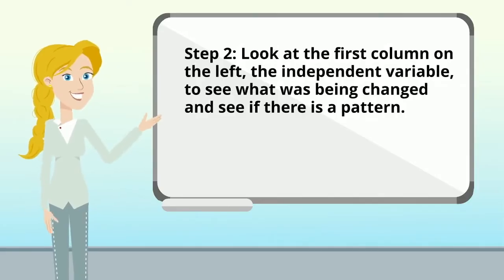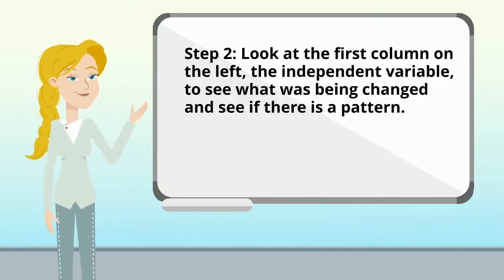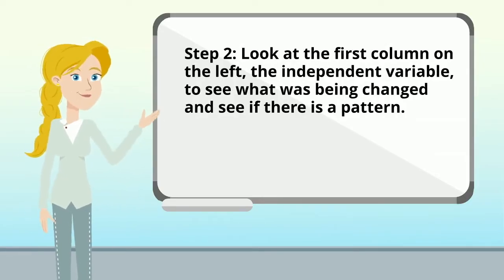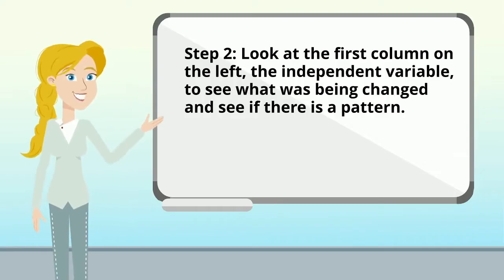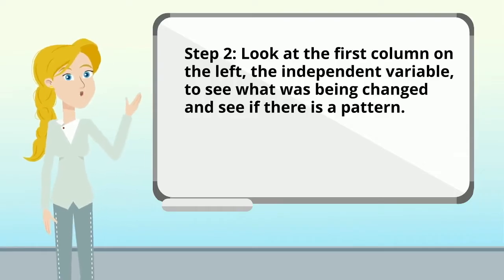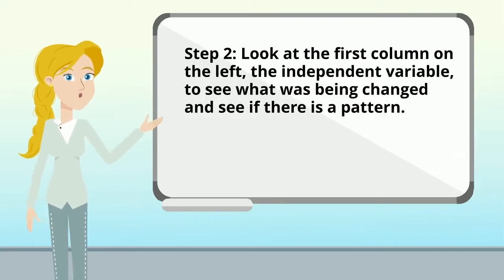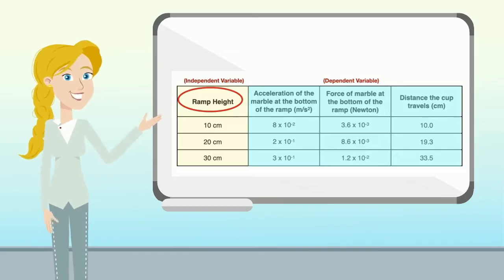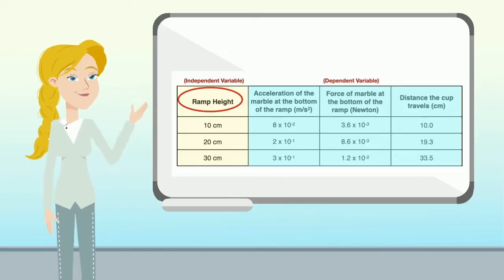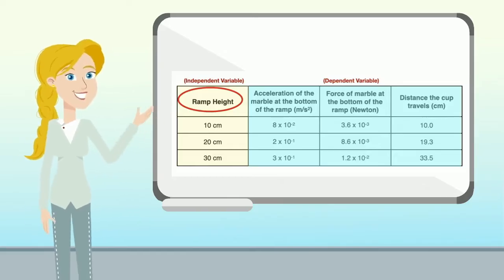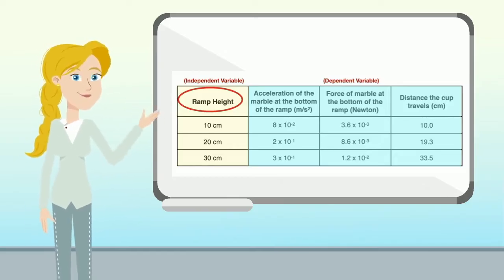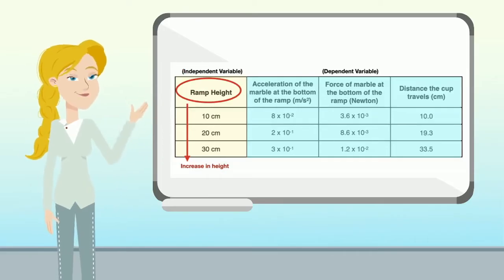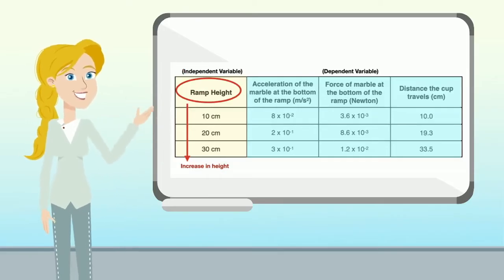In step two, we're going to look at the first column on the left — the independent variable — to see what was being changed and to see if there's a pattern. Looking at the ramp height, the numbers are getting bigger as you go down, so there's an increase in height.